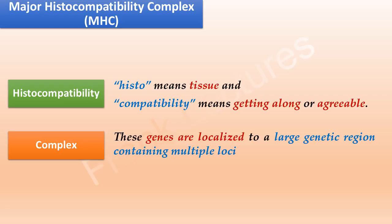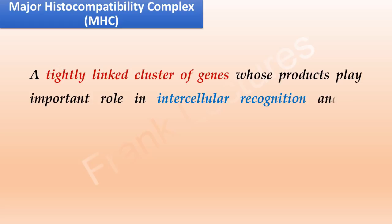The major histocompatibility complex is defined as a tightly linked cluster of genes whose products play an important role in intercellular recognition and in discrimination between self and non-self.